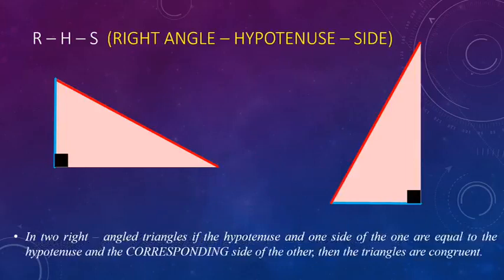So using any of these four criteria you can check whether the given two triangles are congruent or not. Thank you.